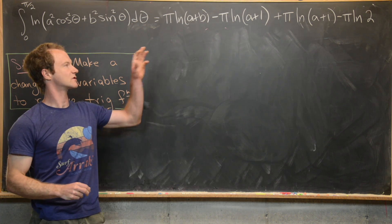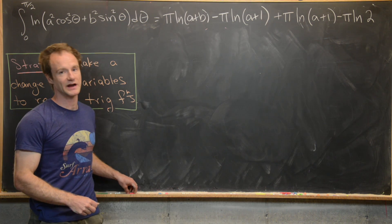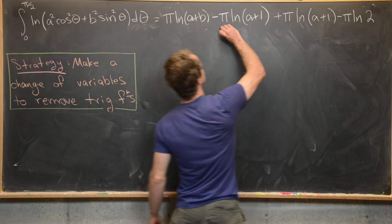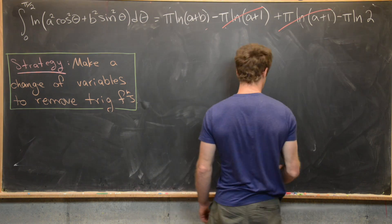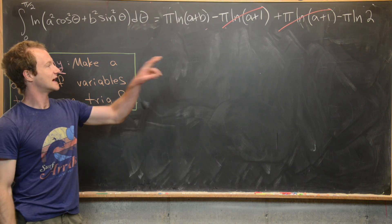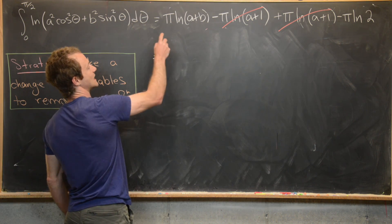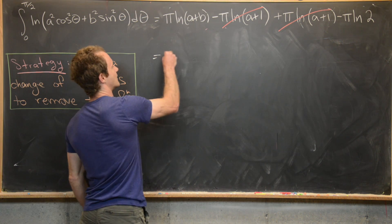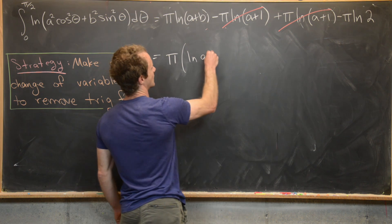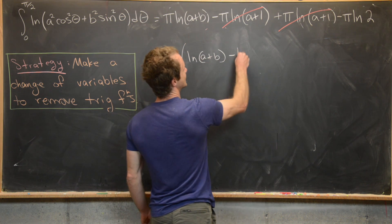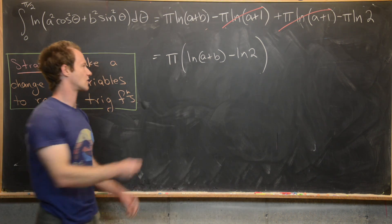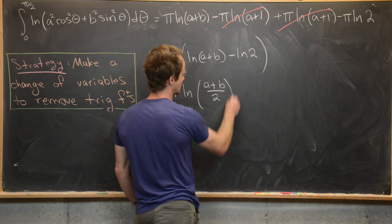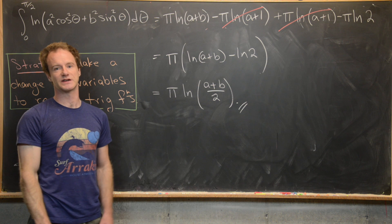Now we have values for both integrals and we're ready to put it all together. The pi times natural log of a plus one terms cancel — negative from the first integral and positive from the second. Combining the remaining terms and factoring out pi gives pi times the natural log of a plus b minus the natural log of two. Using logarithm rules, that simplifies to pi times the natural log of a plus b over two. And that's a good place to stop.